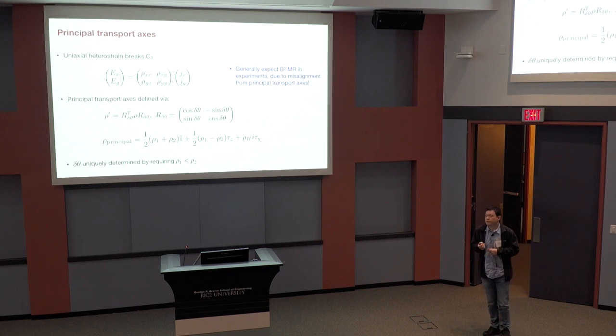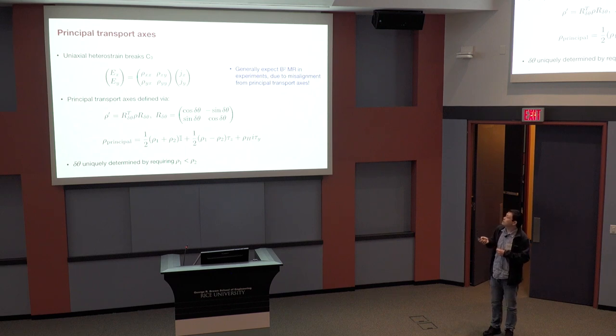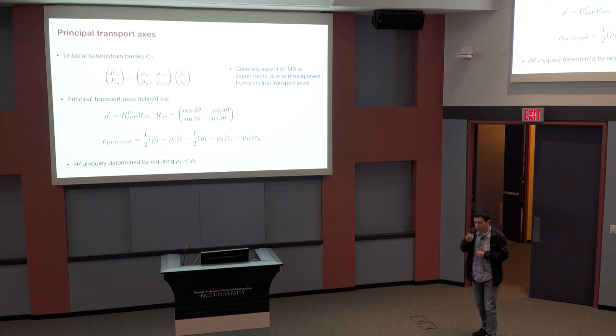Generically because it's measured in the Hall bar geometry, which most likely would be misaligned compared to the principal transport axis. And that means this entire tensor would be non-vanishing. And as a result, one can imagine in the regime governed by the open Fermi surface, extremely large b-squared magnetotransport, one would expect this entire matrix to be affected by this b-squared behavior as well.